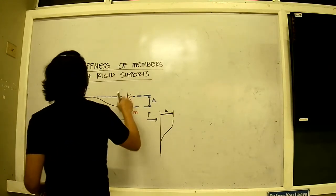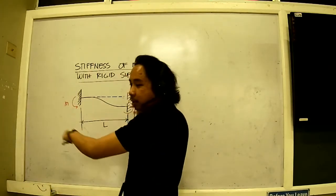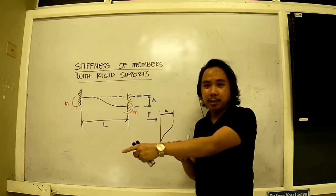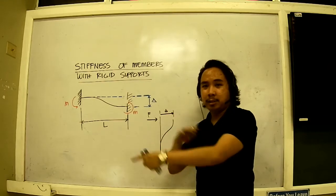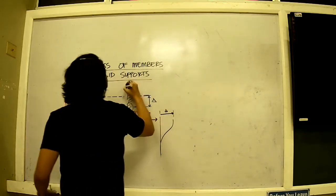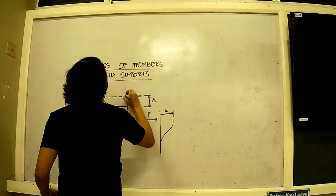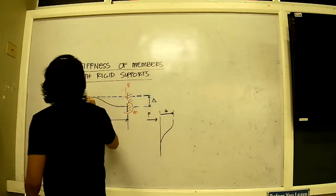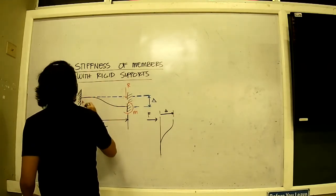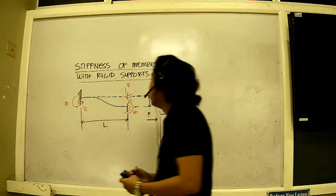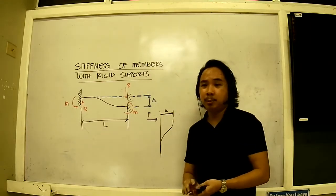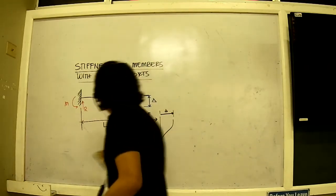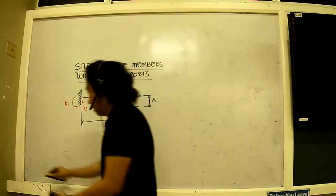Now for that case, these moments are actually counterclockwise. We need a moment that is clockwise to counteract that. Now that moment can be produced by applying a force. There, R. If R is going down here, R should be going up here to maintain equilibrium in the vertical motion.